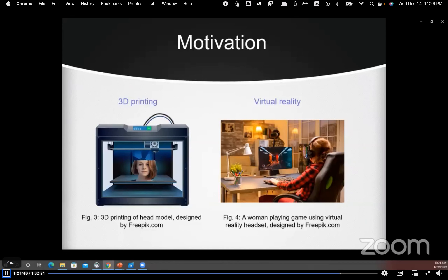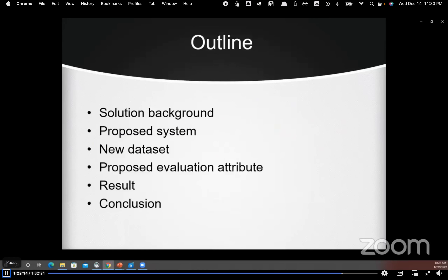On the left side of the slide we can see a 3D printer being used to print a 3D head avatar. On the right side we can see a woman playing a game wearing a virtual reality headset. This type of computer game generally represents the character of the gamer using a humanoid avatar. We want to replace the humanoid avatar with the gamer's own avatar.